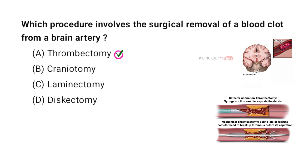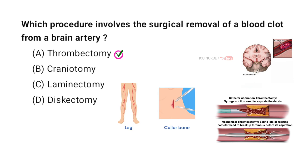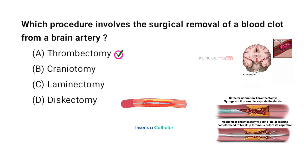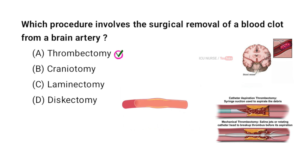The procedure that involves the surgical removal of a blood clot from a brain artery is called thrombectomy. It involves a surgeon making a small incision to access the blocked artery in the brain. The surgeon then uses specialized tools to remove the blood clot, restoring normal blood flow to the affected part of the brain and helping to prevent further damage.